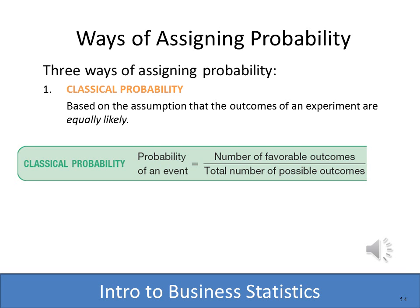When you're reading your textbook, you'll learn that there are three different ways of assigning probability. We're going to talk about two of them in this slide presentation. The first being classical probability. With classical probability, the formula is very simple: the probability of an event occurring is the number of favorable outcomes divided by the total number of possible outcomes.